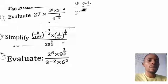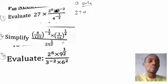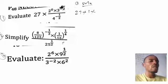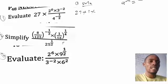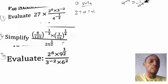So here we have the question: 27 multiplied by 2 raised to the power of 0. You should know from the law of indices that anything raised to the power of 0 is always equal to 1. So 2 raised to power 0 equals 1. Now this next part is a negative index — if you have a raised to the power of minus n, you can express it as 1 over a raised to the power of n. That is the answer according to the law of indices.